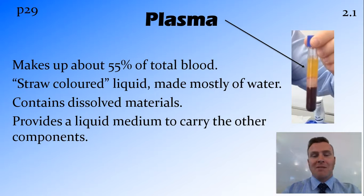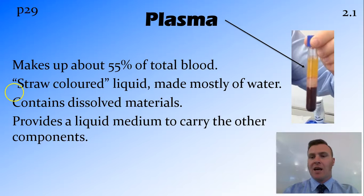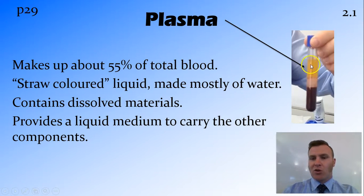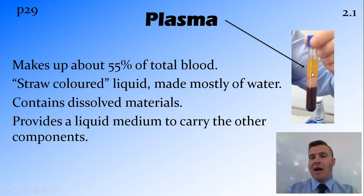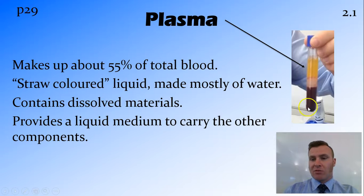Plasma makes up about 55% of the total blood, as you can see in this test tube. This straw-coloured liquid at the top is the plasma. It is mainly made of water, but also contains plasma proteins as well as dissolved materials.